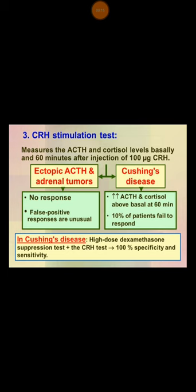You start investigating the patient by doing a dexamethasone suppression test. If the patient fails this test, then you are going to think about Cushing syndrome. Once you diagnose Cushing syndrome, you need to localize the lesion — you should ask yourself: is it in the pituitary, adrenal, or ectopic?